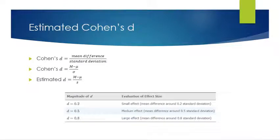When we talk about effect size, if you end up with a d of 0.2, that's a small effect. Somewhere around 0.5 would be a medium effect, and somewhere around 0.8 would be a large effect.